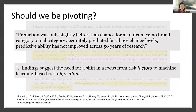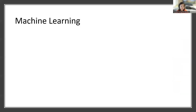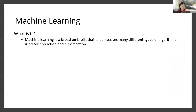The thing is, if we want to better our predictive abilities in our assessments and our interviews, then we need to better understand suicide as a whole and find a method to model suicide in a way that fully appreciates its complex and multidimensional nature. And that method may be machine learning. So, what is machine learning? Machine learning is a broad umbrella that encompasses many different types of algorithms used for prediction and classification.